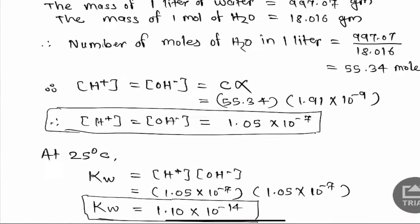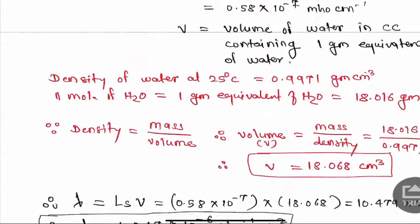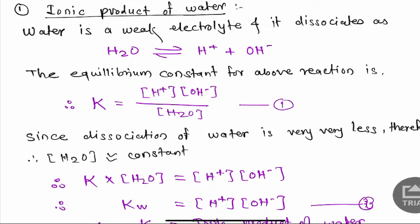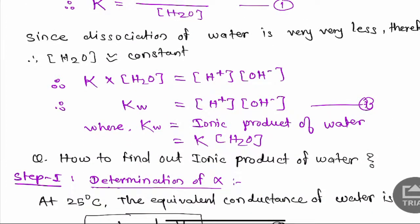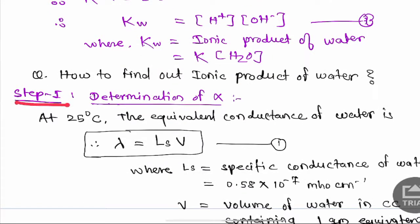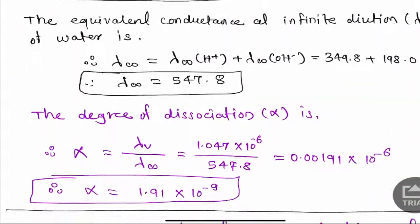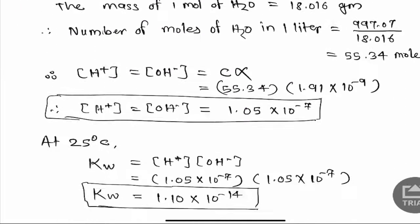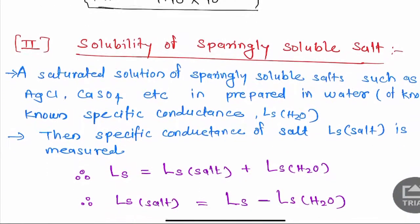In this way the ionic product of water is calculated. To quickly revise: write the equilibrium reaction, write the equilibrium constant equation, note that [H₂O] is constant, multiply K × [H₂O] to get Kw — the ionic product of water. This is calculated in two steps: first determination of alpha (degree of dissociation), and second determination of Kw.